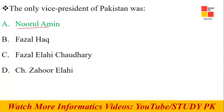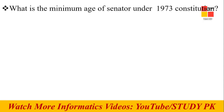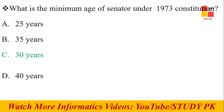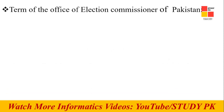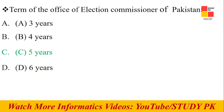Next question: The only Vice President of Pakistan was Nurul Amin. This is the right option. Next question: What is the minimum age of a Senator under the 1973 Constitution? The right answer is 30 years. Next question: The term of office of the Election Commissioner of Pakistan is 5 years.